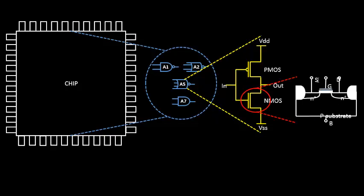When you expand the transistor, you have the source terminal, the drain terminal, the gate terminal, the body terminal, the substrate, and N+ doping regions. Any modifications to the electrical characteristics of this NMOS transistor will eventually affect the functionality of the chip. Now you understand the relation — why there is a need to learn about transistors. That is why we start from this point and eventually end up building a chip.